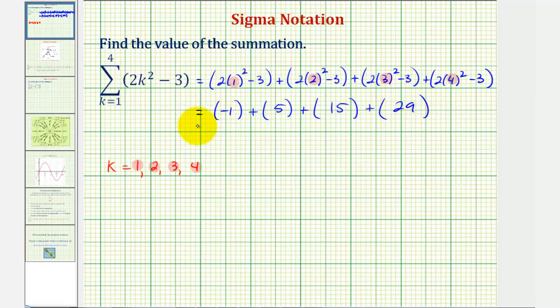And now we find the sum. So we have negative one plus five, that's four, plus fifteen, that's nineteen, plus twenty-nine, that's forty-eight. So the value of this summation is forty-eight. I hope you found this helpful.